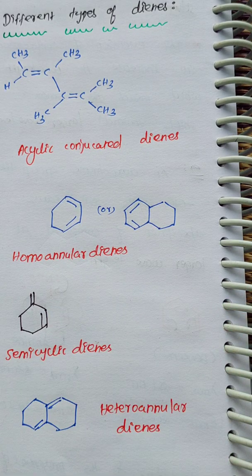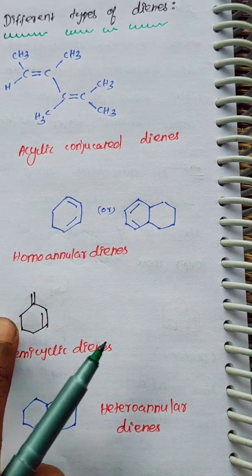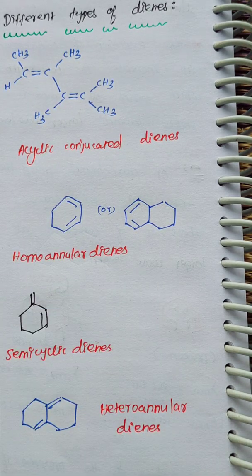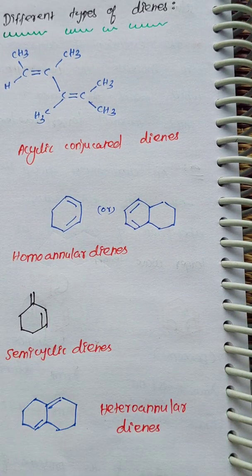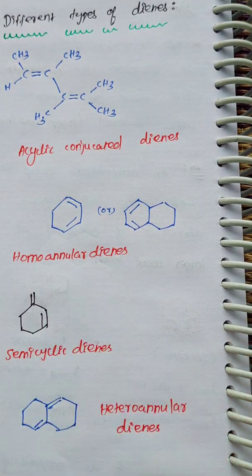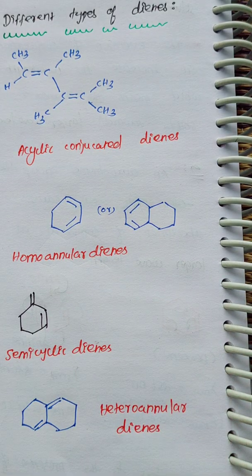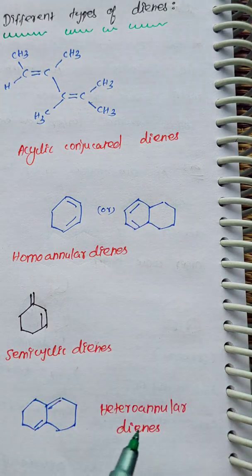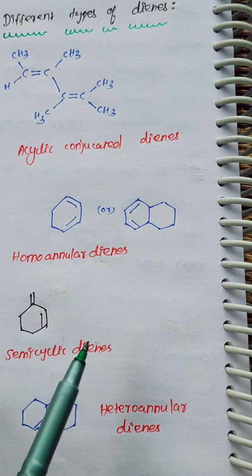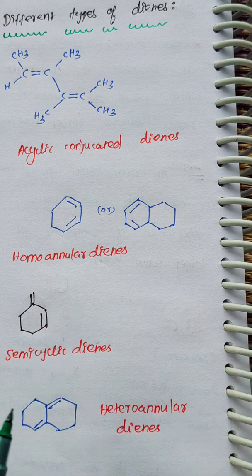In the diene, we have two double bonds. Next is Homoannular dienes. What is the ring? One ring with two double bonds — this is the Homoannular diene. For example, this is a fused ring, but the double bonds are present in an alternating manner and both are in the same ring. This is called Homoannular dienes.